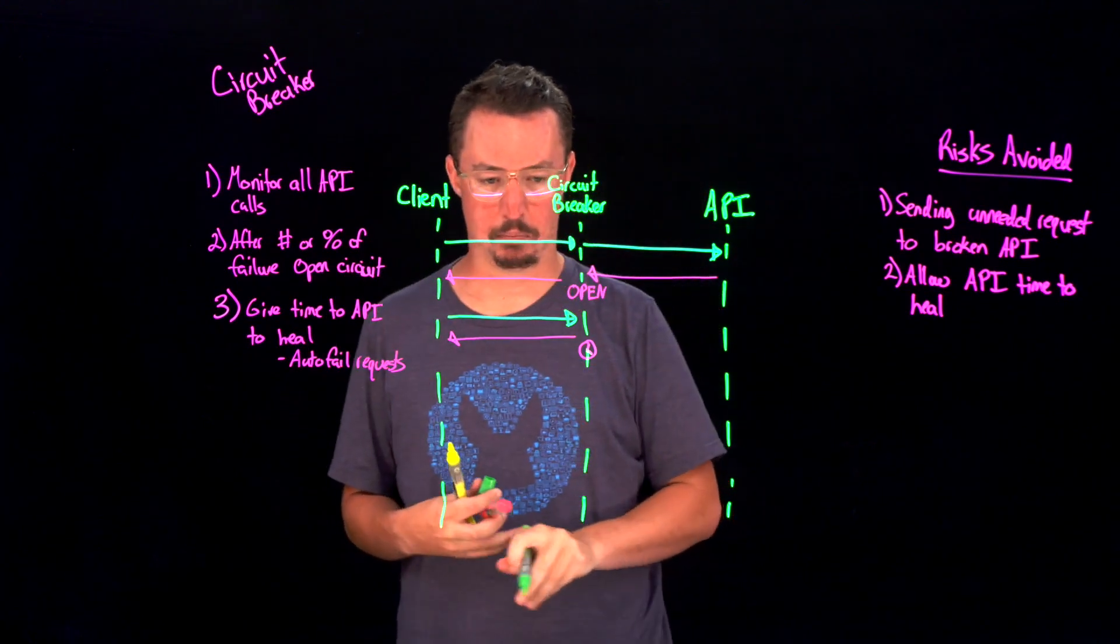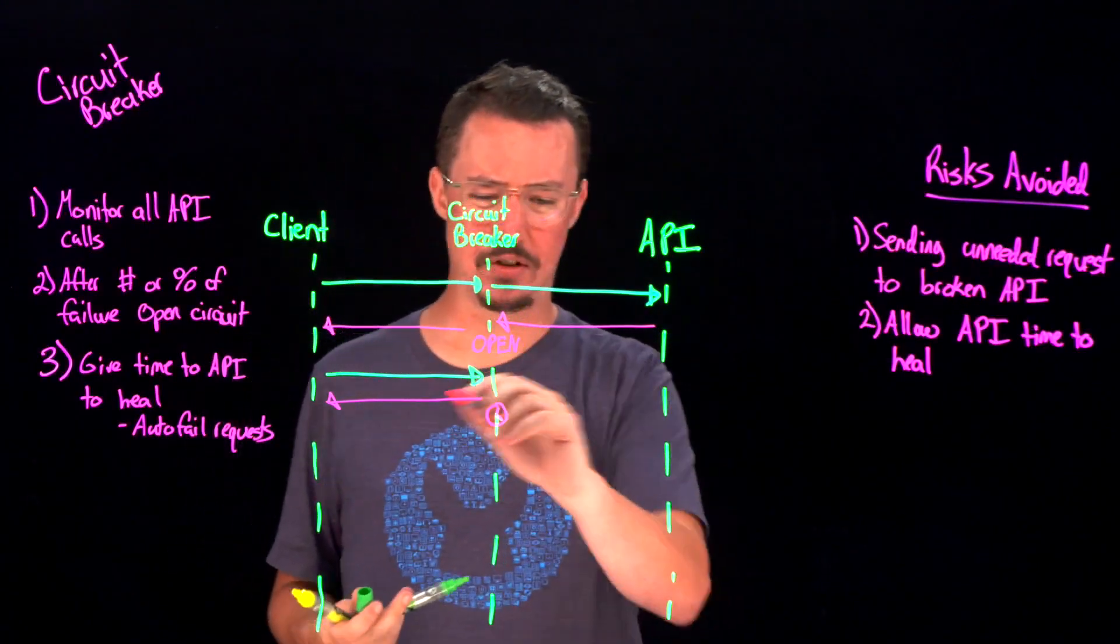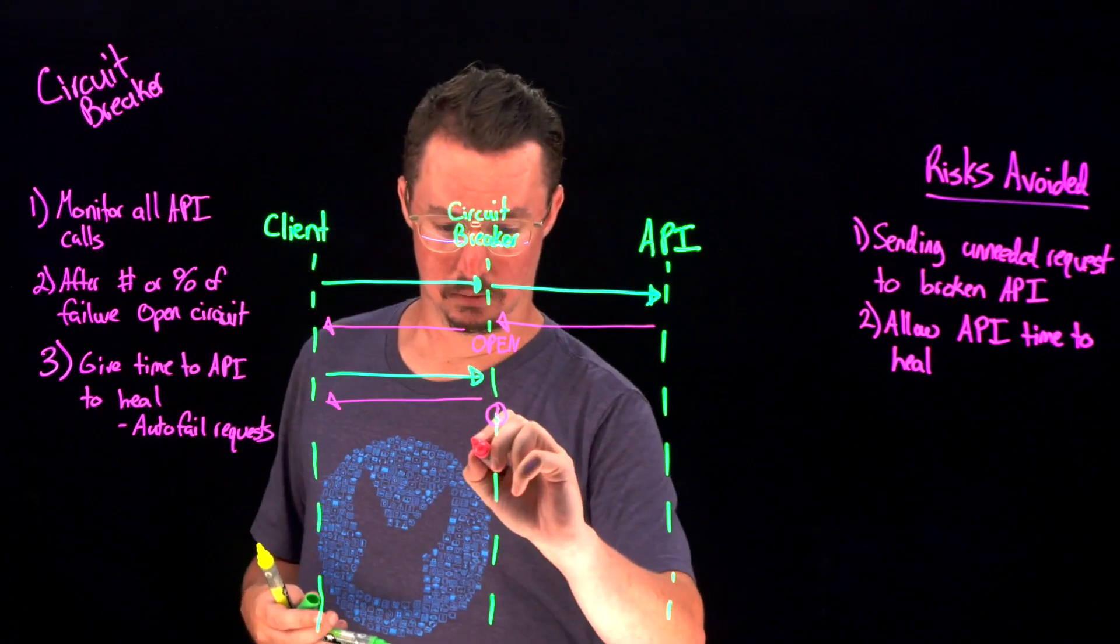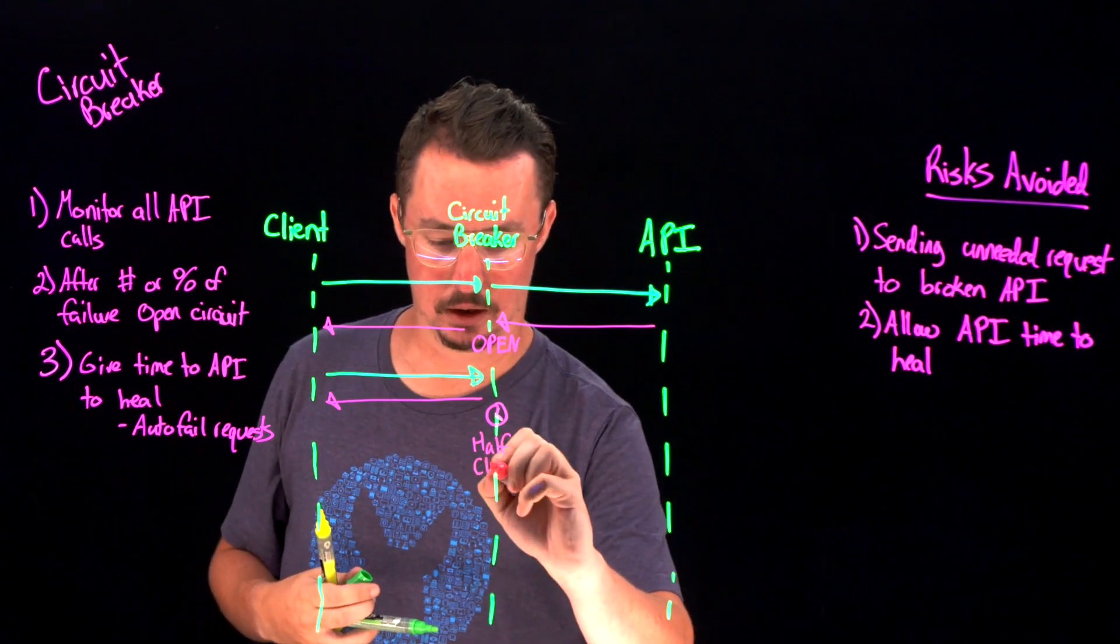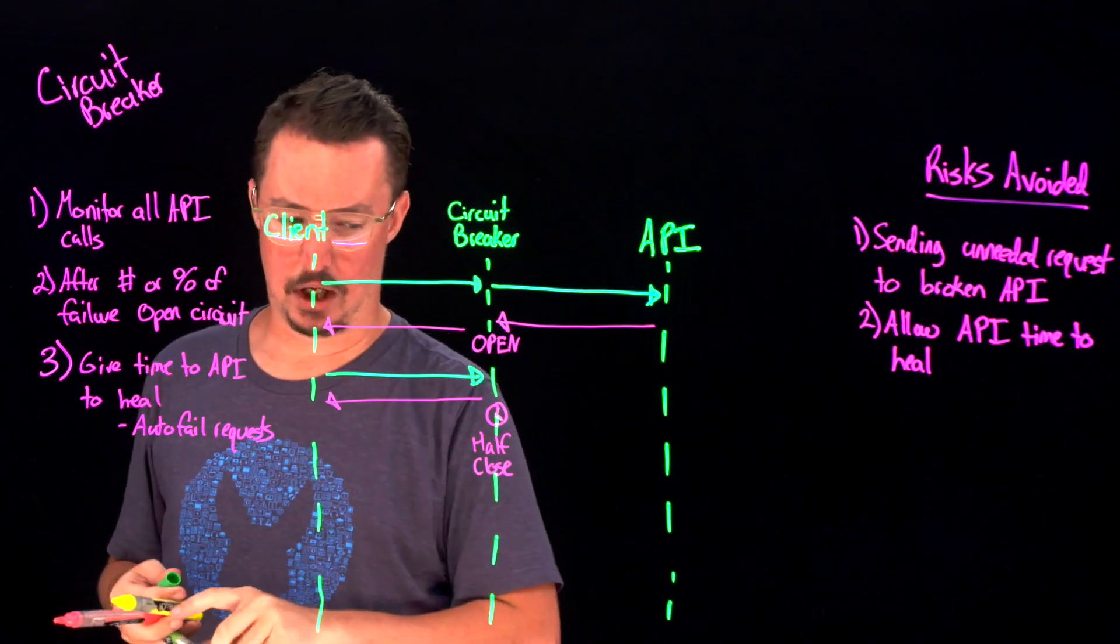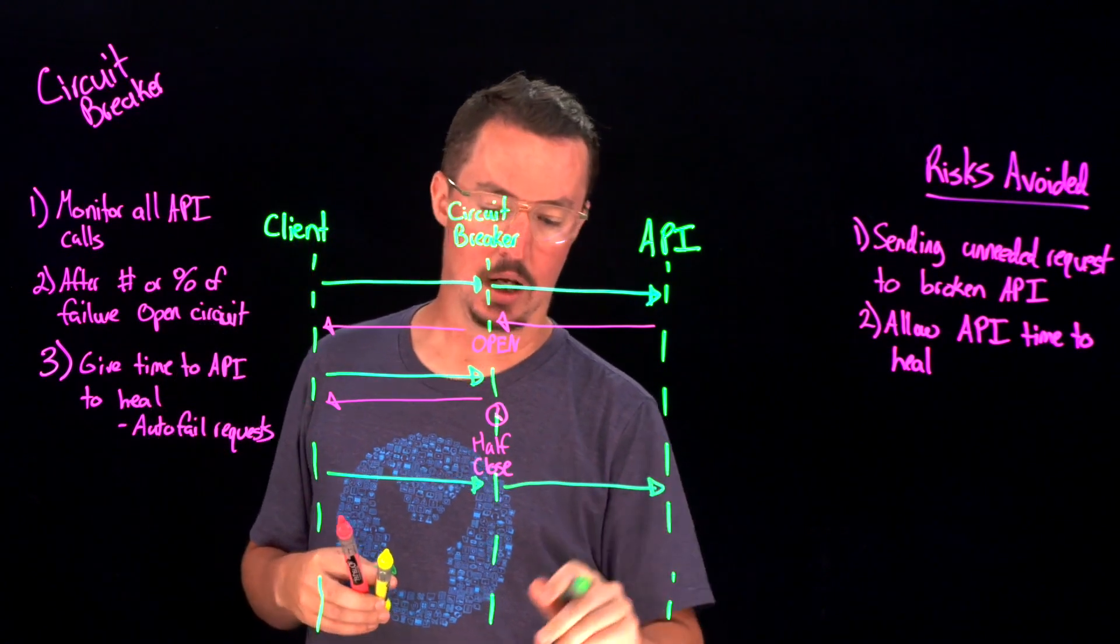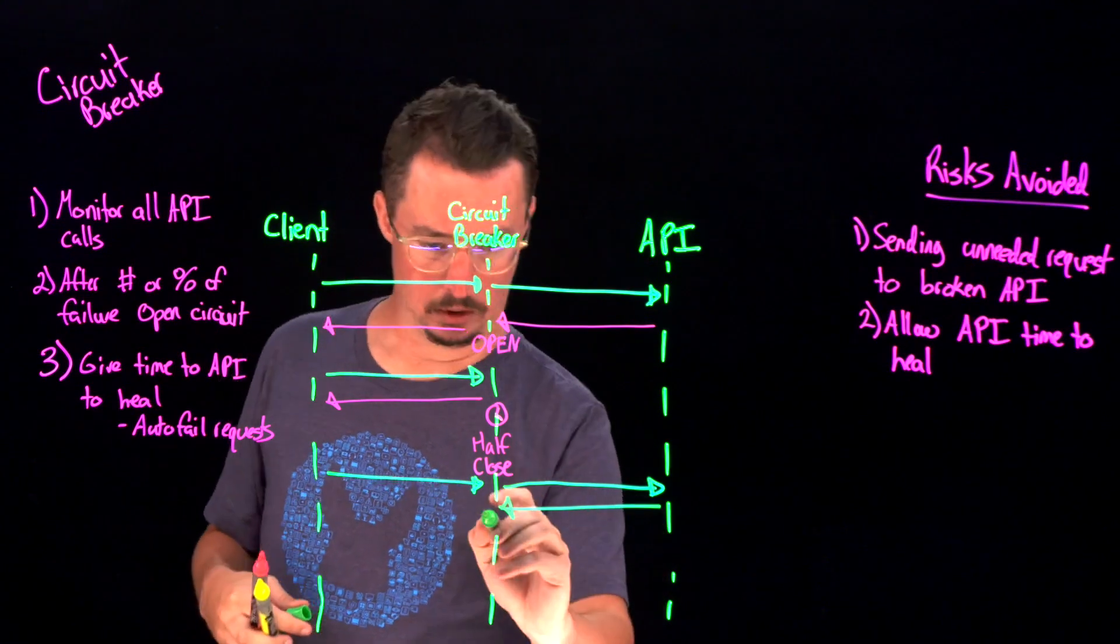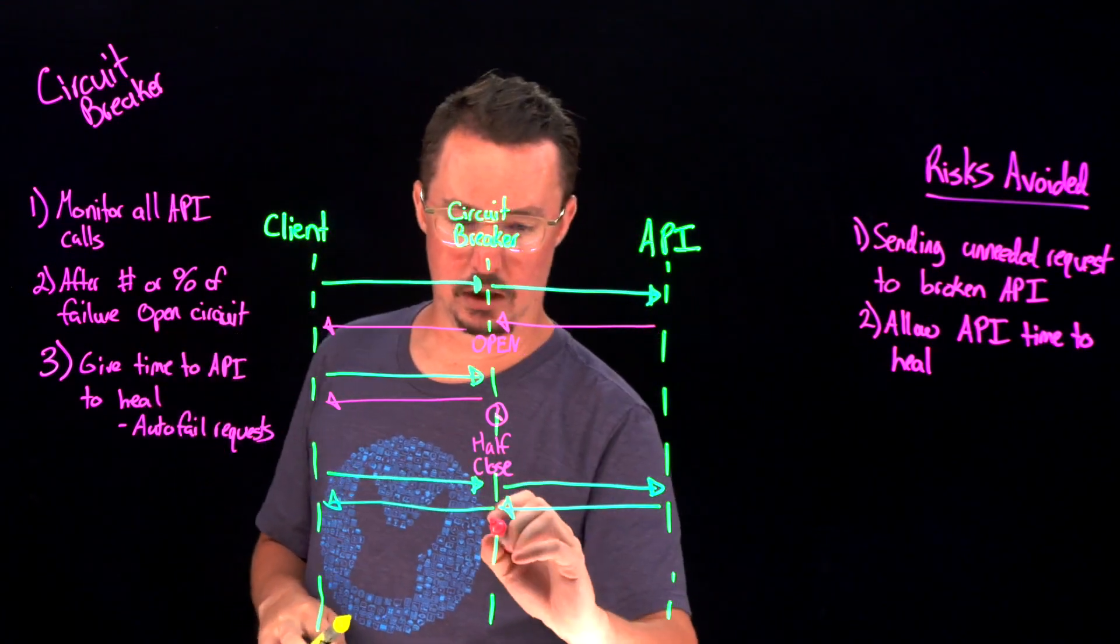So after this period of time surpasses, what we can do is we can half close the circuit breaker. So what this is going to do is only allow a certain number of requests to go back over to this API. So, again, if you think about closing the circuit, we're going to allow some of the traffic to go back. And so now what will happen is if we go and send a request through, some of these requests will actually allow back through. So we'll send it over here. And let's say, for instance, the response back was successful. That's great. We're going to send back that positive response back to the client. What we're going to do is we're going to fully close this circuit now.